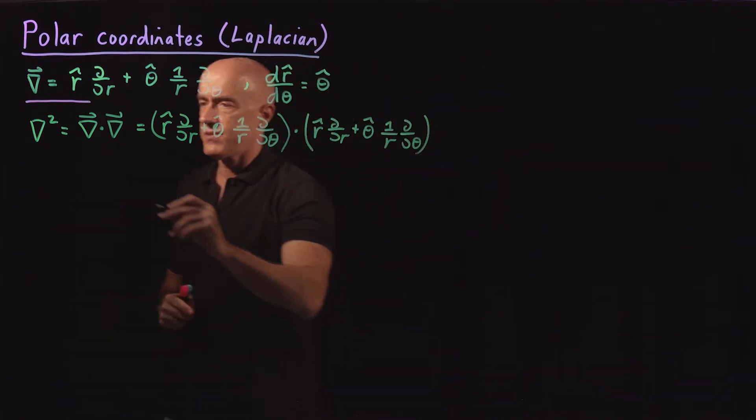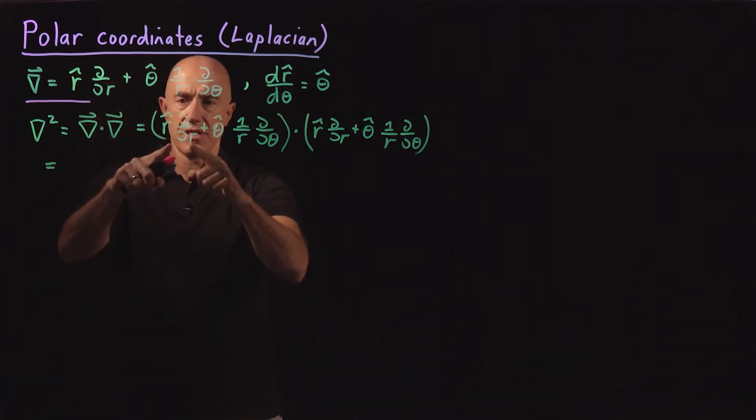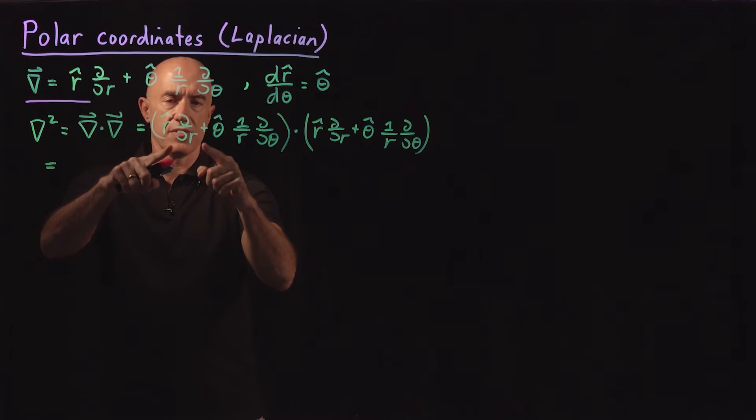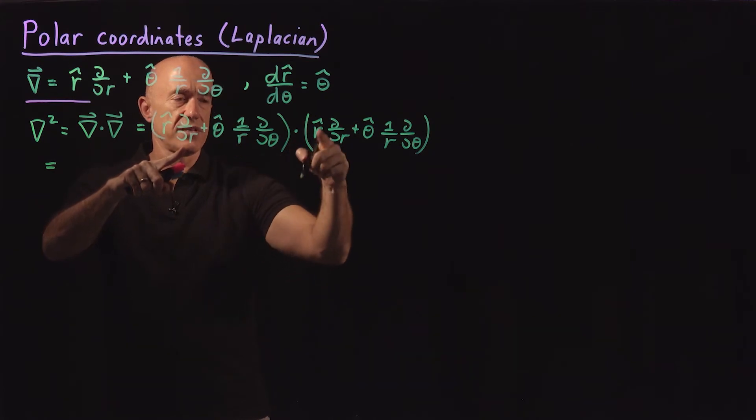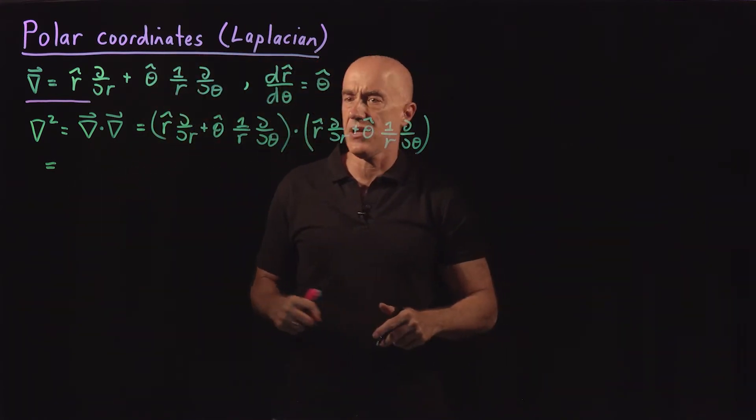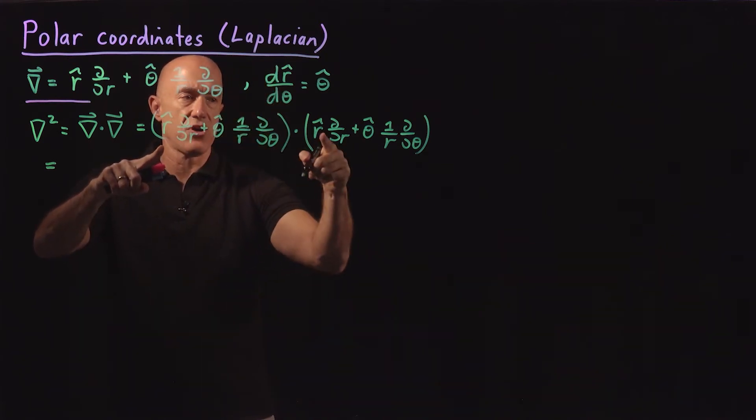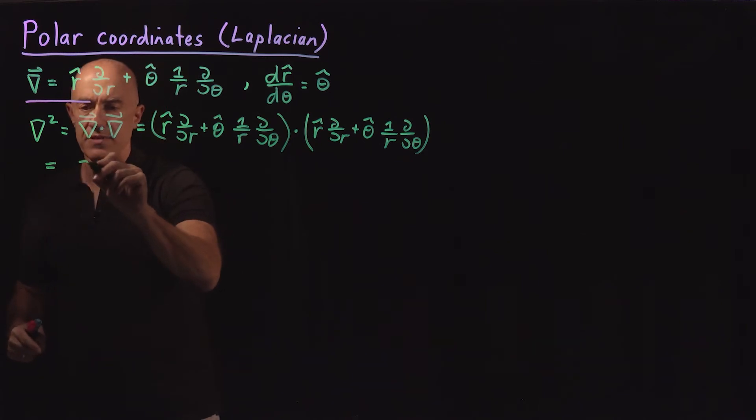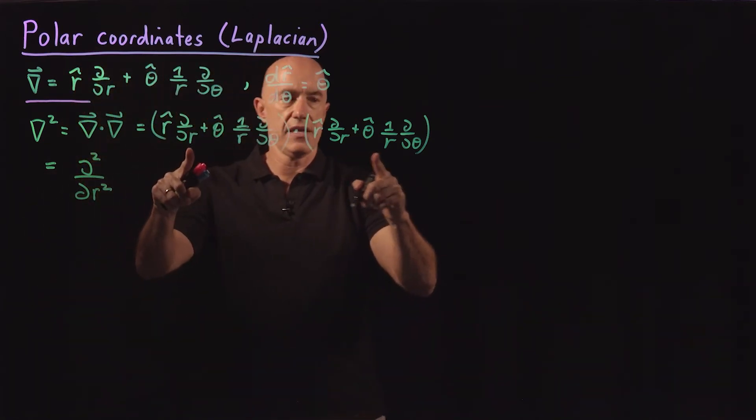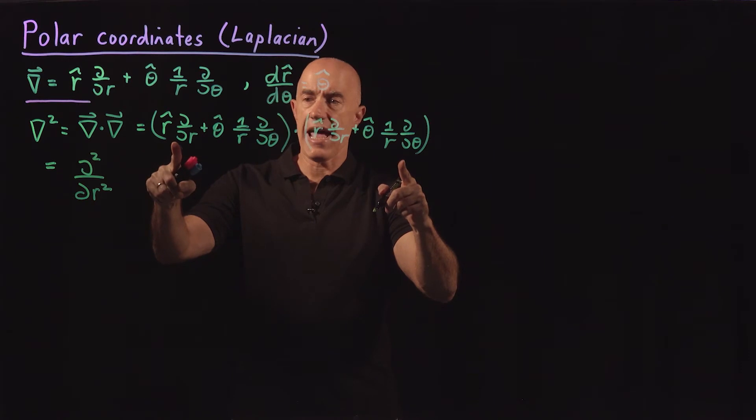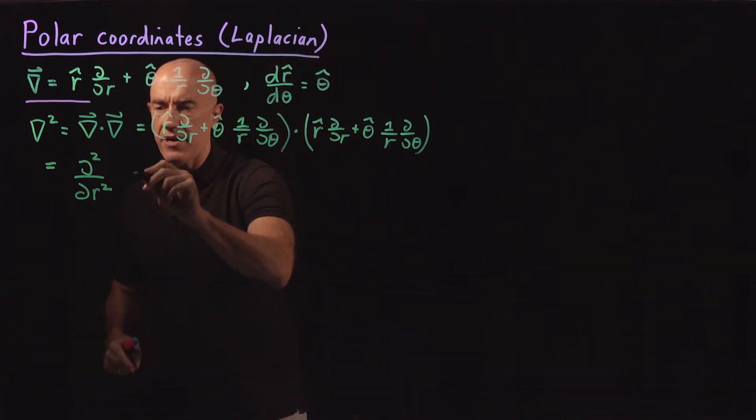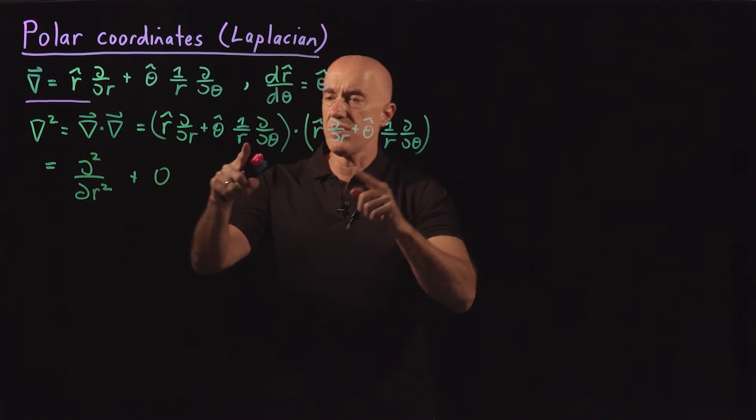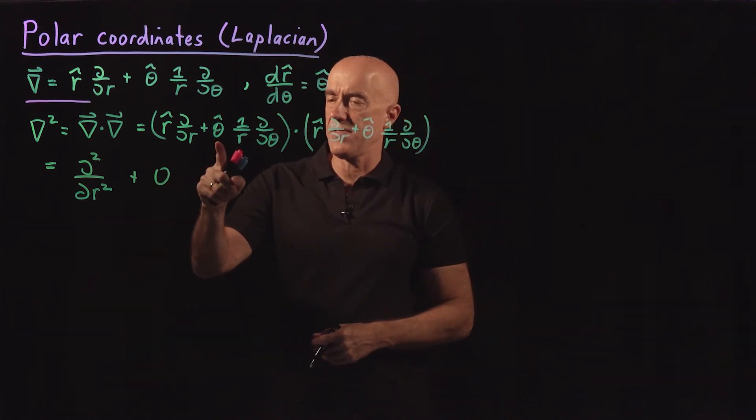So we have four terms. Let's start with the r hat term. The r derivative doesn't affect r hat and theta hat. They only depend on theta. So the first term here will be r hat dot r hat is 1, so that will simply be the second derivative with respect to r. The next term is r hat dotted theta hat, which is 0. So the second term here will be 0.